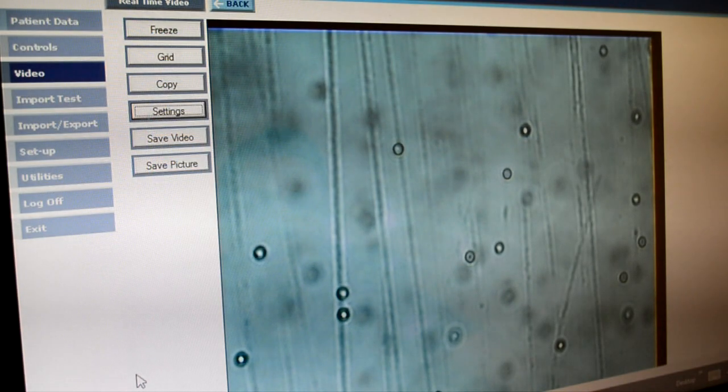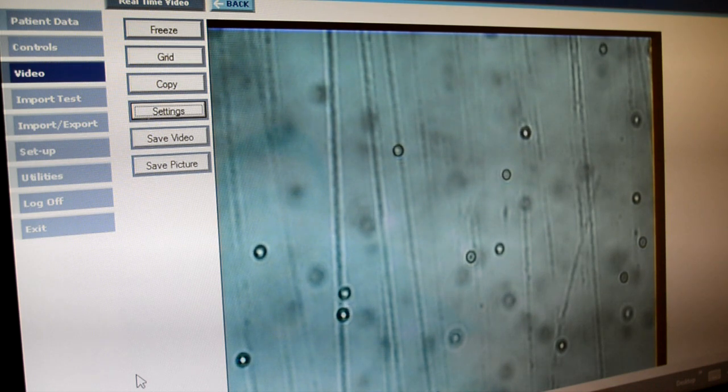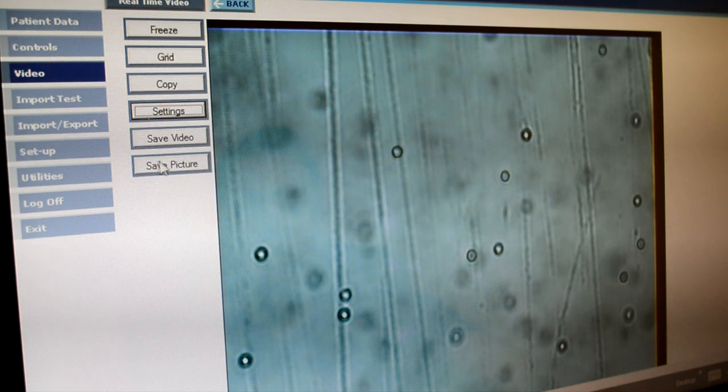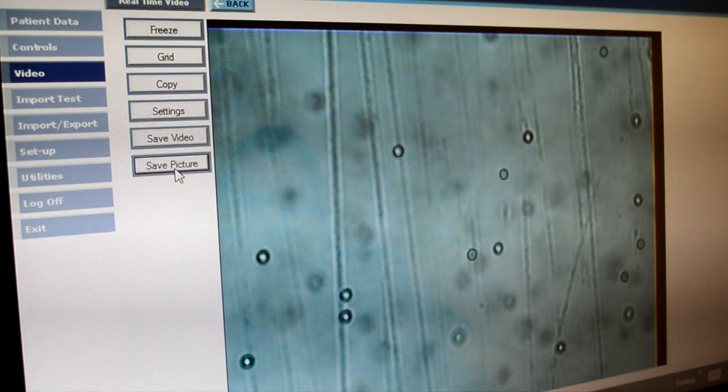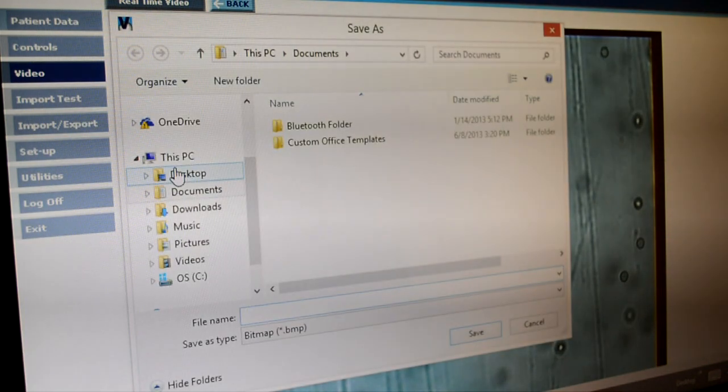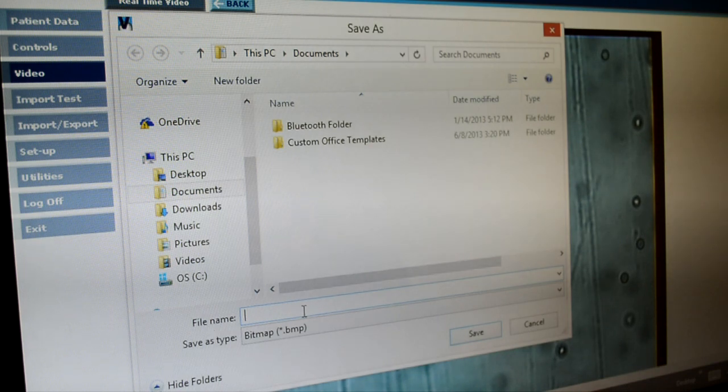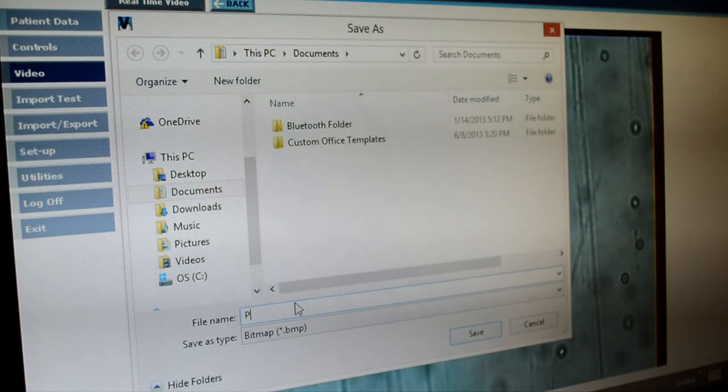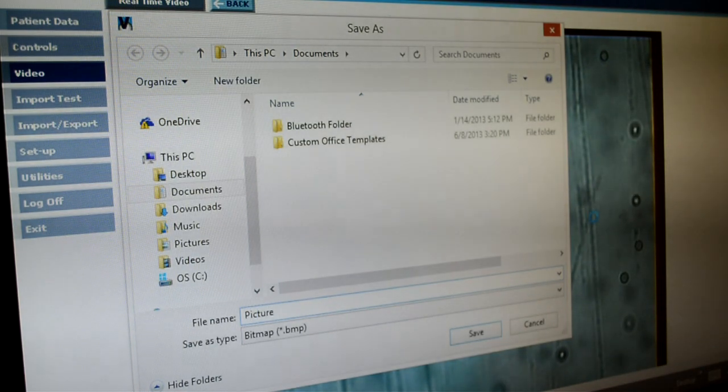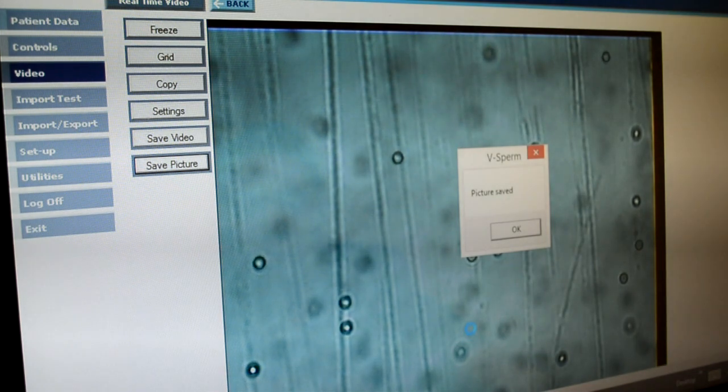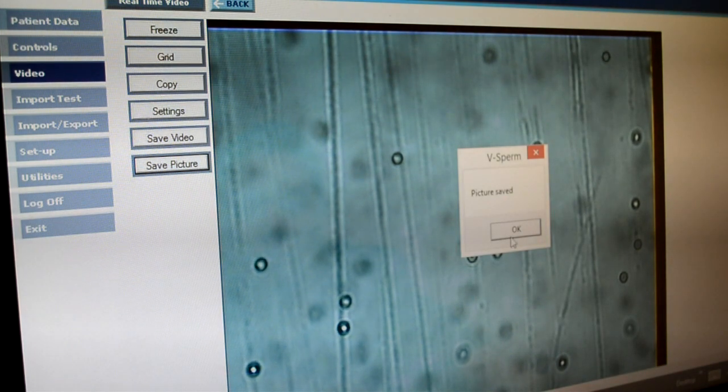To capture an image of your sample, select save picture, the bottom option. The system will now ask you to choose a file name and click save. The system will confirm that the image has been saved.